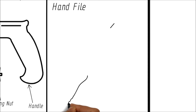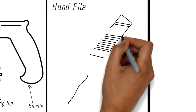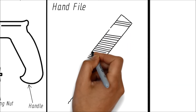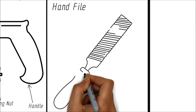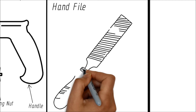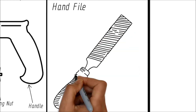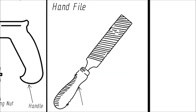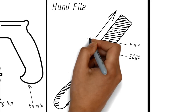Next, and the last one, is the hand file. This is a very simple drawing of a hand file. Now let us put the names: handle, the tang which is fixed onto the handle, the edge, the face of the file, and the length of the file.